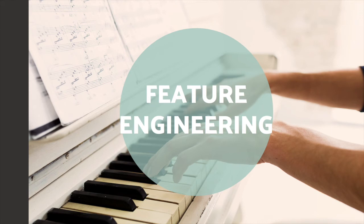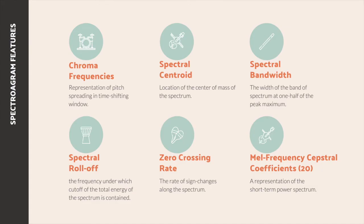Since the results given by CNN were not ideal, we also tried some machine learning methods like logistic regression, Gaussian naive Bayes, and support vector machine to train classifiers. First, we extracted features from the spectrogram using Librosa. The features collected for each sound clip include: chroma frequencies, a representation of pitch spread in a time-shifting window; spectral centroid, the center of mass of the spectrum; spectral bandwidth; spectral roll-off, the frequency below which a cutoff of total spectral energy is contained; zero crossing rate; and finally 20 mel-frequency cepstral coefficients (MFCCs), a representation of the short-term power spectrum.